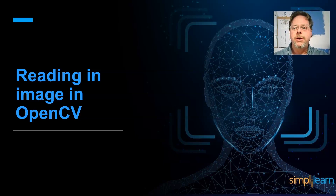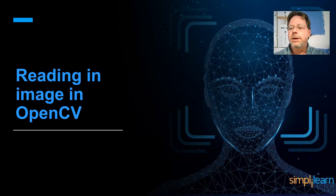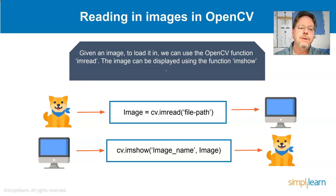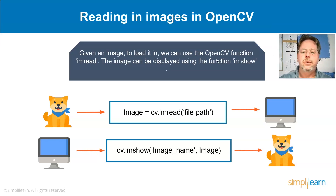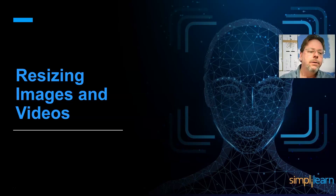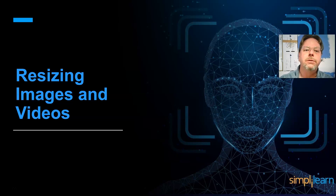The most common thing is reading an image in OpenCV. We'll do this in code as well. When reading an image, we use the OpenCV function IMRead. The image can be displayed using IMShow. Your basic workflow is to read an image in, manipulate it, and then display it. You can also read in videos and process them frame by frame.